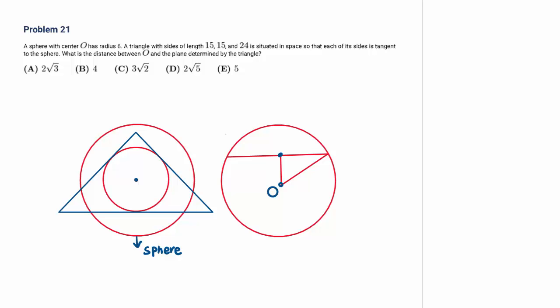This is question 21. A sphere with center O has radius 6. A triangle with sides 15, 15, 24 is situated in space such that each side of the triangle is tangent to the sphere. The cross-section through the triangle gives a circle. We need to find the distance D from the center O to the plane of the triangle.